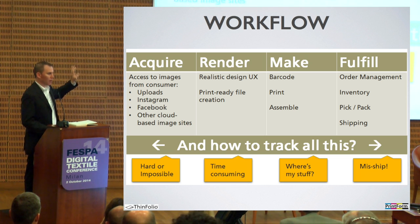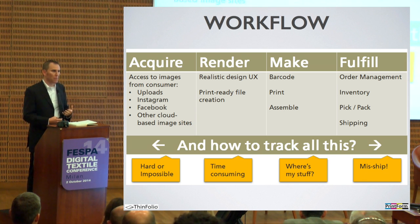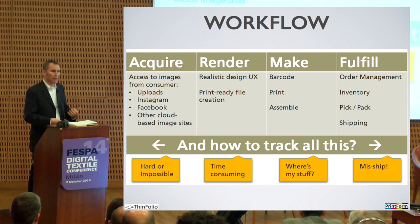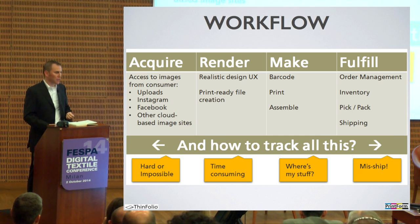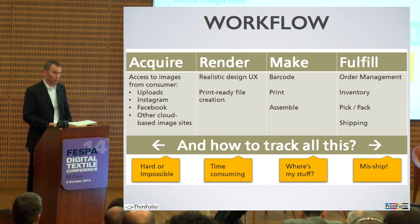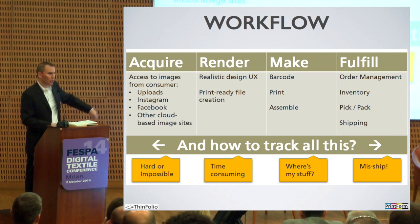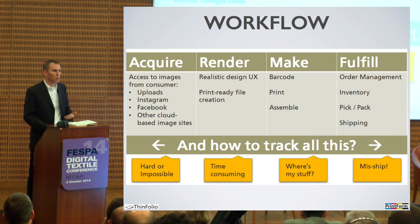Here's a brief snapshot of our workflow. We need to acquire images from the consumer — turns out not necessarily the easiest process. We need to render those images in a form the consumer will understand, and also render something we can use to produce on the printer, then cut and sew. Then we make the product, add a barcode, print, assemble, and ship. We need to manage the order, track our raw materials inventory, and pick and pack. And we had to figure out what happens when we get a large number of orders — these are all the things that can go wrong.